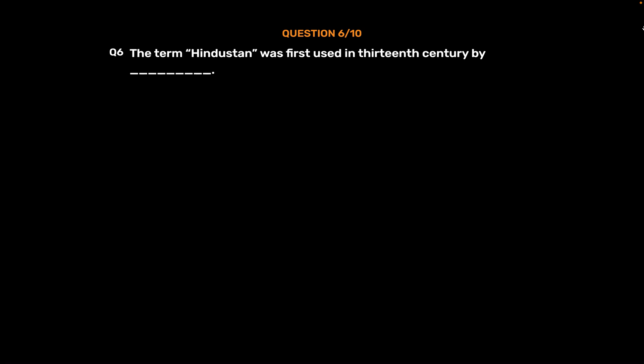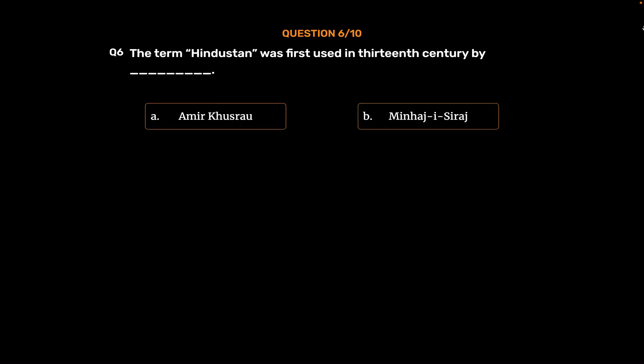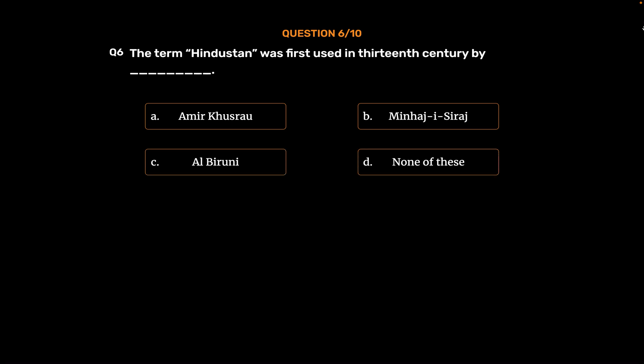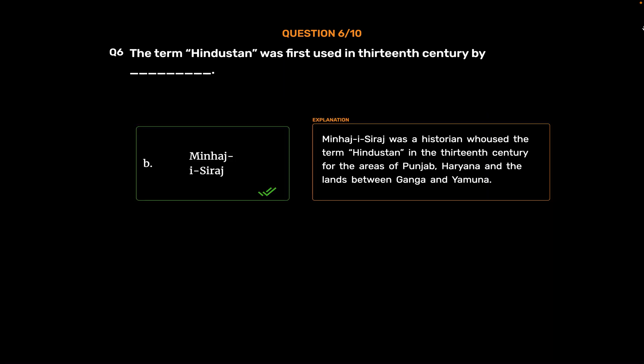Question No. 6. The term 'Hindustan' was first used in the 13th century by: Option A: Amir Khusro. Option B: Minhaj Aisiraj. Option C: Al-Biruni. Option D: None of these. The correct answer is Option B: Minhaj Aisiraj. Minhaj Aisiraj was a historian who used the term 'Hindustan' in the 13th century for the areas of Punjab, Haryana, and the lands between the Ganga and Yamuna.